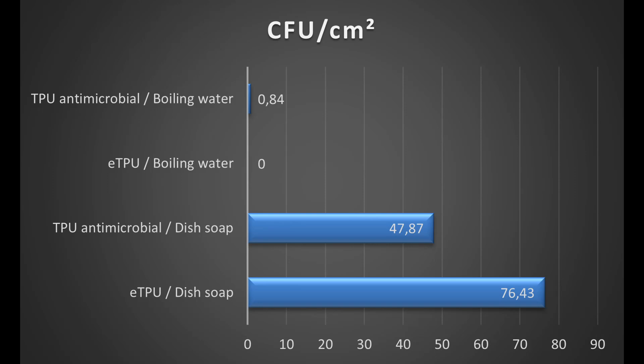And this graph is summary of the results. First two data is the CFU units per square centimeter of the test cups after boiling as a cleaning method. In both cases this is very close to zero. These values, only on one test cup TPU antimicrobial there was some contamination, but this is also very close to zero.